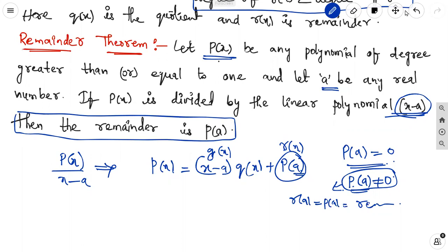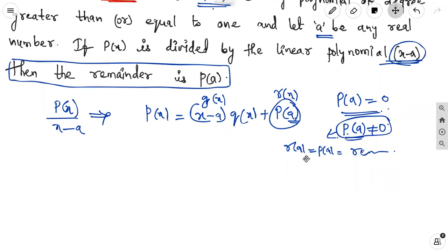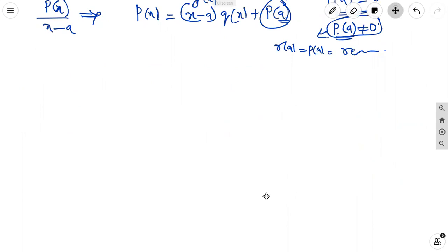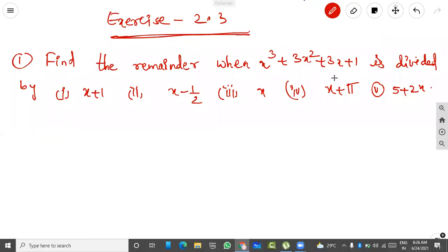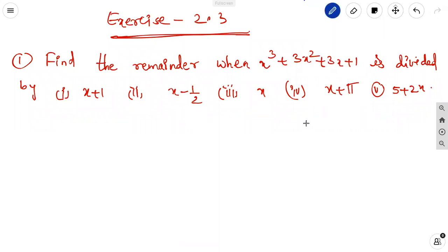Now we are discussing some problems on the Remainder Theorem. Let us discuss Exercise 2.3. The first problem is: find the remainder when x cubed plus 3x squared plus 3x plus 1 is divided by (i) x plus 1, (ii) x minus one-half, (iii) x, (iv) x plus 5, (v) 5 plus 2x.